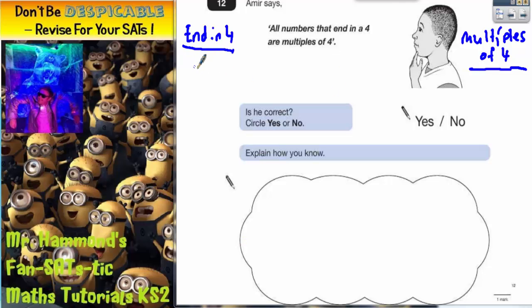Let's have a look at numbers that end in a 4. You can obviously have 4, 14, 24, 34, 44, 54, 64. You could go on further, but we don't need to go any further than that.